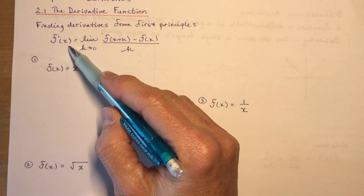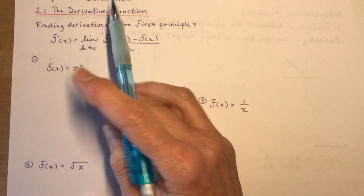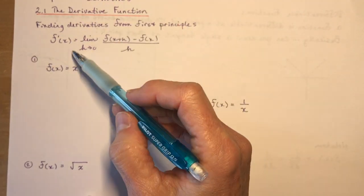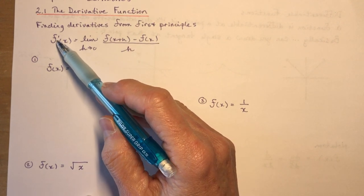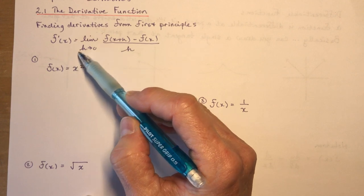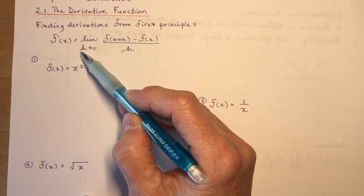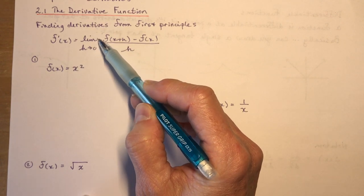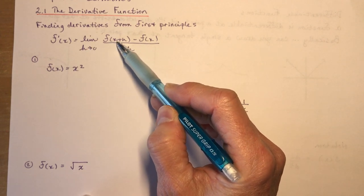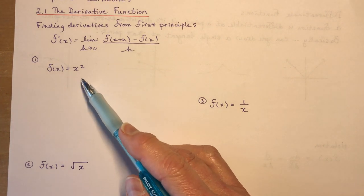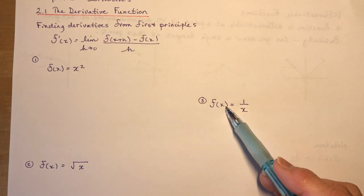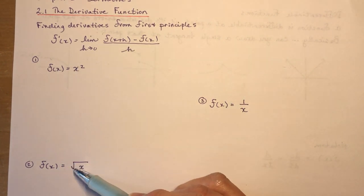This is the whole derivative function. It's a slope function. f'(x) is the limit as h approaches 0 of f at x plus h minus f at x over h. I'm going to do three basic calculations for a polynomial, a radical, and a rational function.